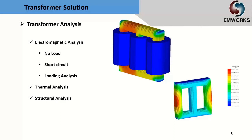We also have thermal analysis. When a transformer is loaded, it is not ideal — there is resistance in the coil and core losses in the steel core, which generate heat. We need to understand how much the transformer will heat up in order to design a proper cooling system. Finally, we have structural analysis, which is important for special conditions — for example, when a short circuit occurs and high current creates a strong magnetic field that produces strong forces, potentially causing deformation of the core.